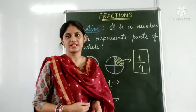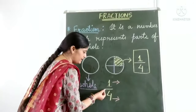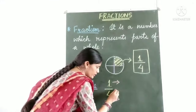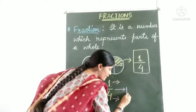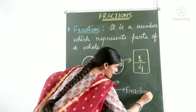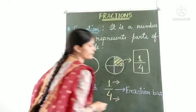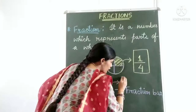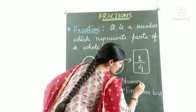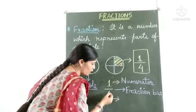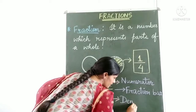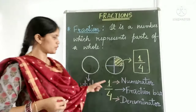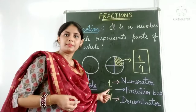Each fraction is written using two numbers separated by a line. The number written above this line — what is this line called? This line is called the fraction bar, or division bar. The number written above the fraction bar is called the numerator, and the number written below the fraction bar is called the denominator. Whenever we write a fraction, we use two numbers separated by a fraction bar.